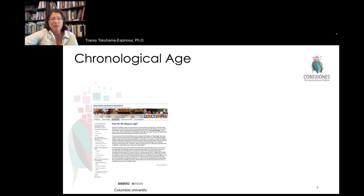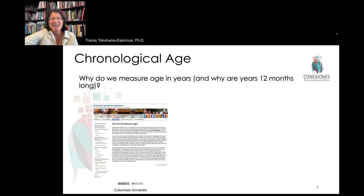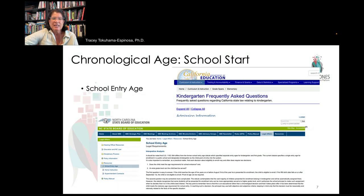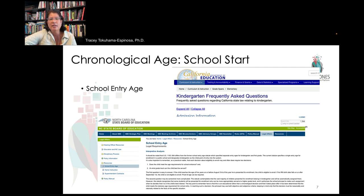Chronological age is basically nothing more, according to Columbia University, than how the Earth orbits the sun — how long it takes and how we measure a year using the Julian calendar with 12 months. But this has implications for education. We consider what is an appropriate entry to school, to kindergarten. We've talked a lot about the great importance of high-quality early childhood education having a great impact.